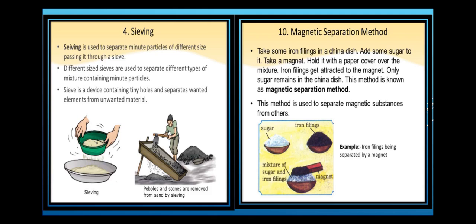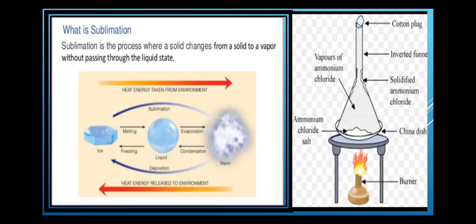The last method for solid-solid separation is sublimation. Sublimation is the process where a solid changes directly from a solid to a vapor without passing through the liquid state, and then converting back into its solid state. This direct change from solid to vapor and back to solid, without passing through the liquid state, is called sublimation.